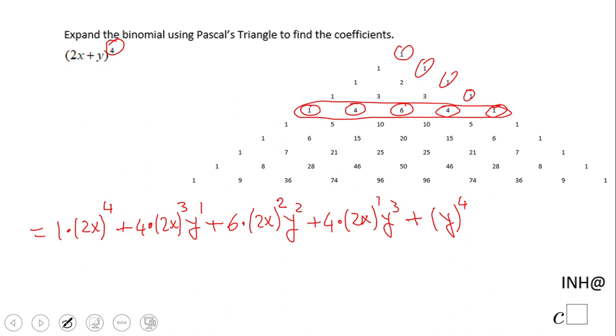So now we're just going to do some simplification. And here we have 2x to the fourth power, the whole quantity 2x to the fourth power, that will be 16x to the fourth power plus 2x to the third power.